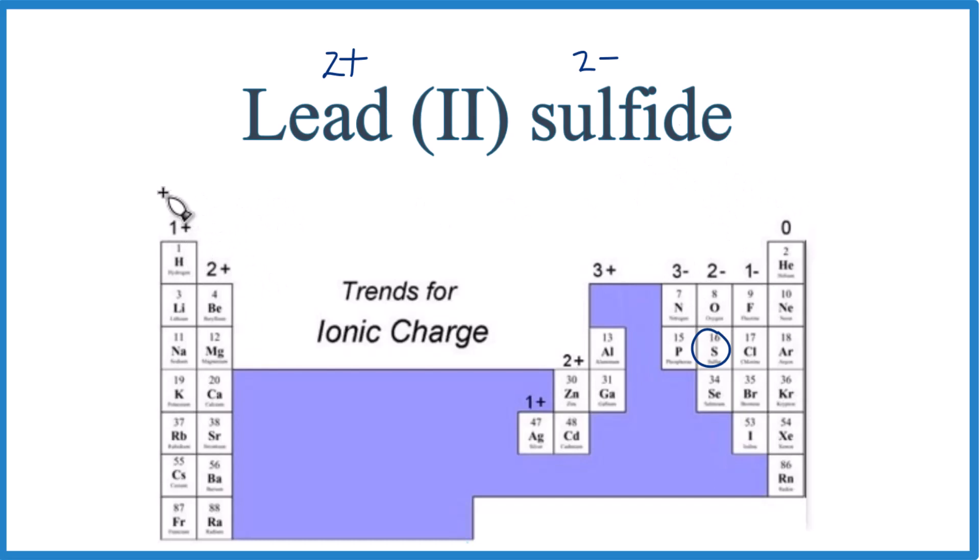You can see the trend: 1+, 2+, skip these transition metals, and then we go 3+, 4+, 4-, 3-, 2-, 1-, and 0. It's important to know the ionic charge.